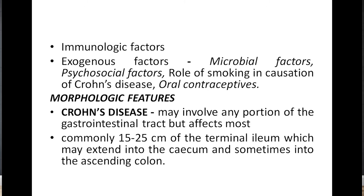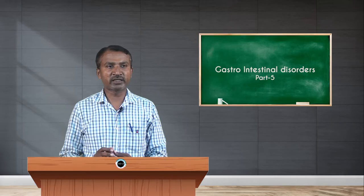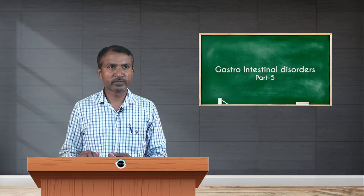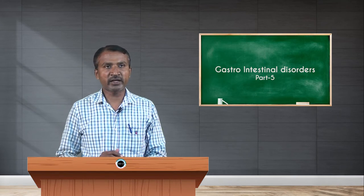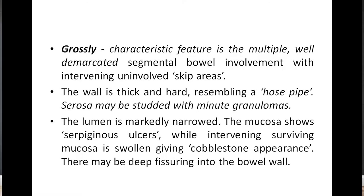Regarding morphological features, Crohn's disease may involve any portion of the gastrointestinal tract but affects most commonly 15 to 25 centimeters of the terminal ileum, which may extend into the cecum and sometimes into the ascending colon. Grossly, a characteristic feature is multiple well-demarcated segmental bowel involvement with intervening uninvolved skip areas.